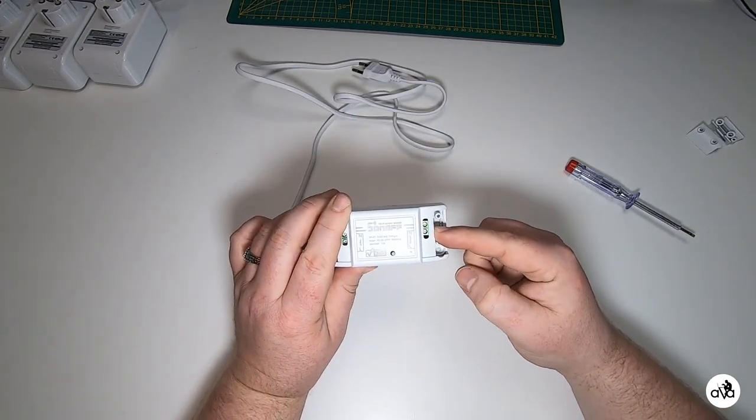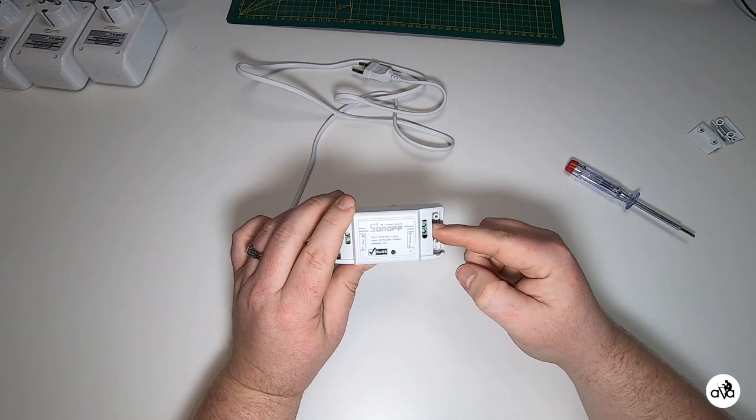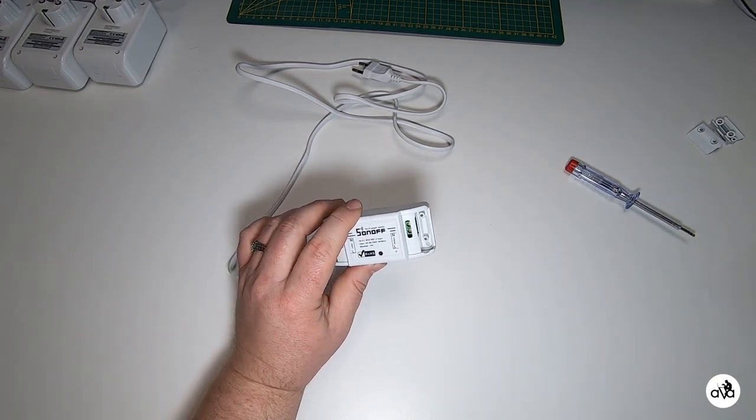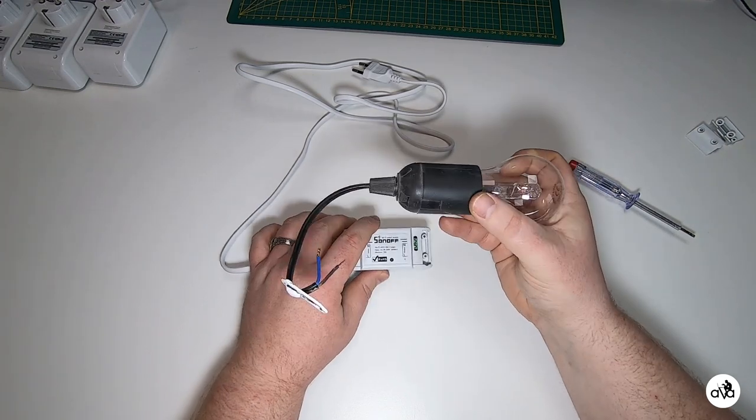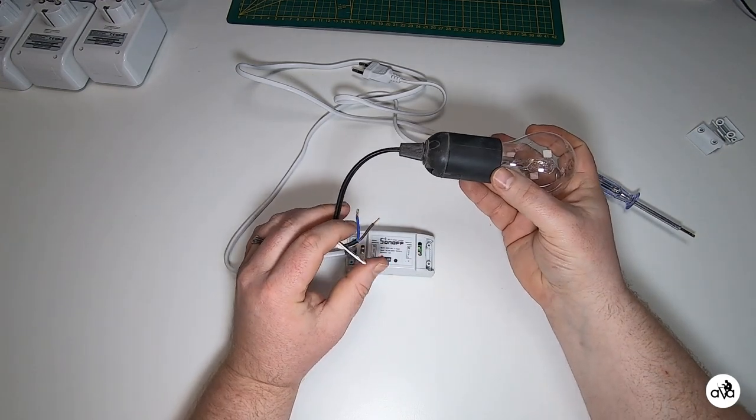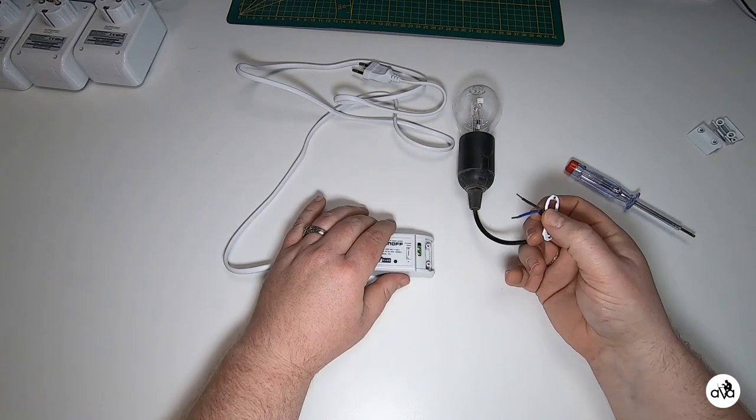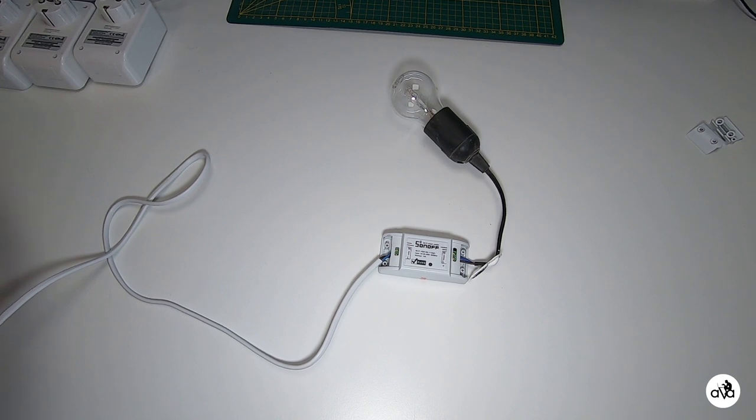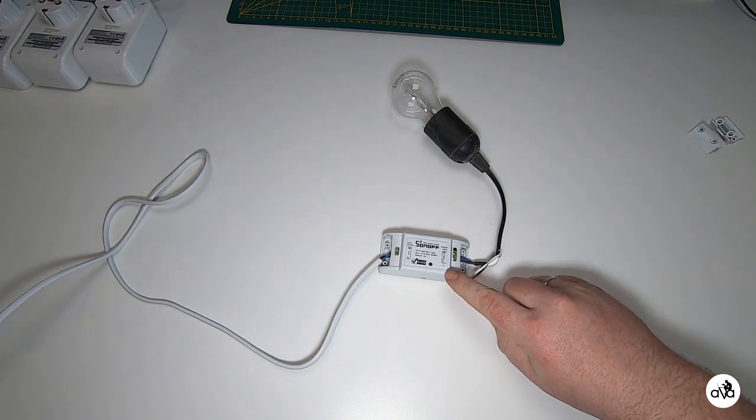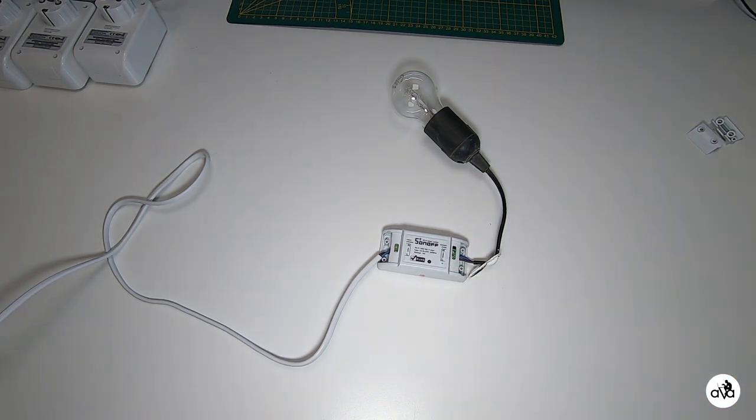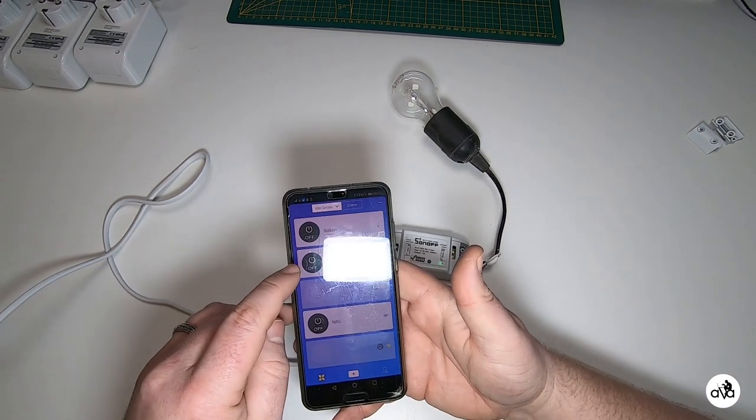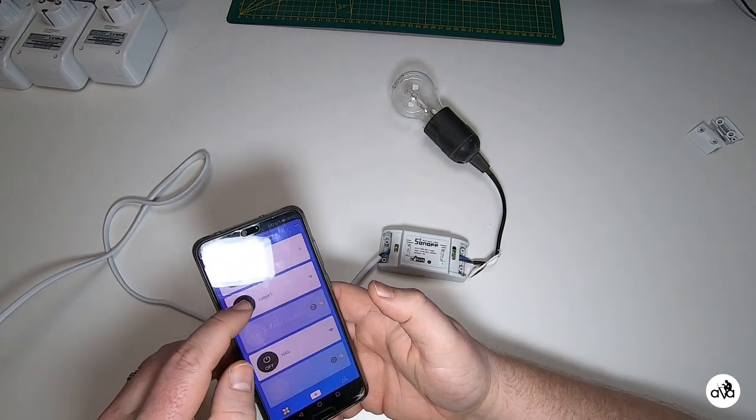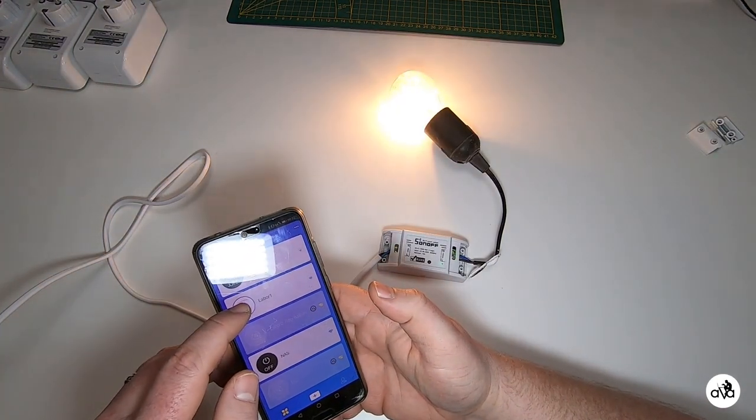On the output side we connect our electrical device, in this case our renovation lamp. Again we connect the brown to the L and the blue to the N connector. If we plug the device into power we can see that the green LED is blinking. As soon as the LED is lighting continuously, the device has made a connection with their server. If the connection is established we can actuate the Sonoff device via our cell phone.